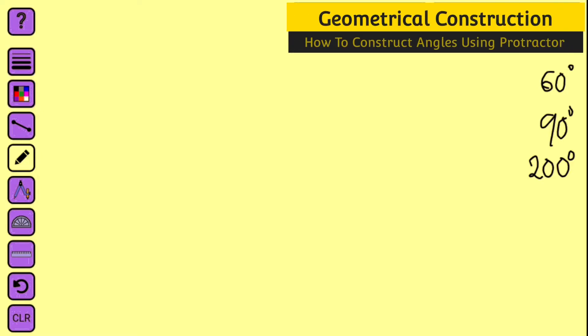Hello, good morning viewers. In our previous lesson we have seen how to measure angles using a protractor. In this tutorial we are going to learn how to construct angles using a protractor, and we are only going to be constructing 60, 90, and 200 degrees. So let us start with 60 degrees.